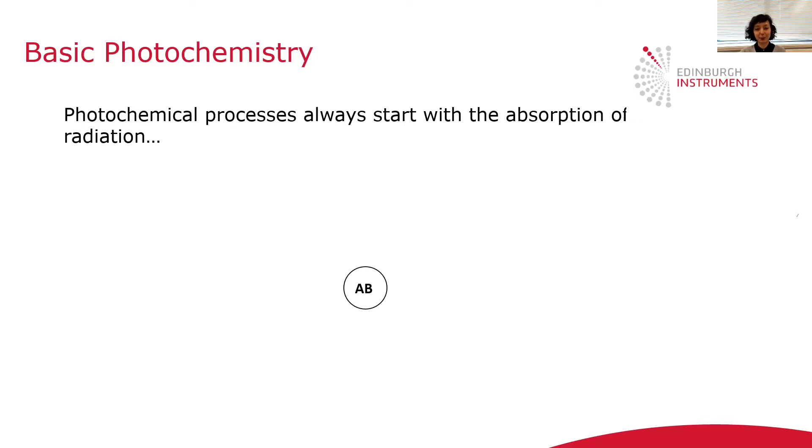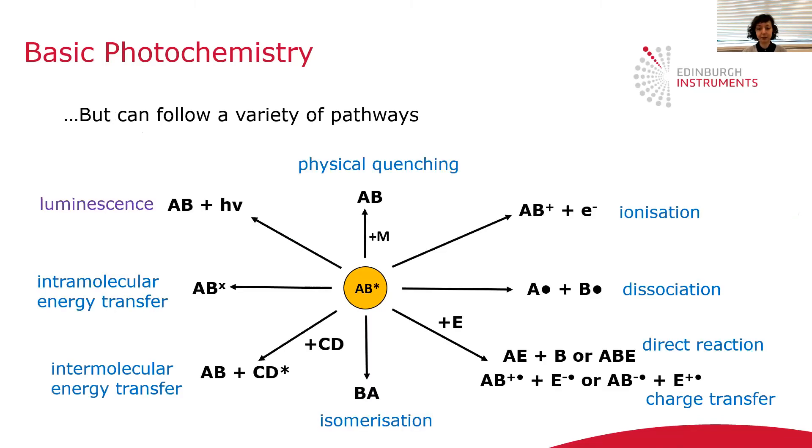Let's see what happens in a typical photochemistry experiment. Let's imagine that we have a molecule AB and we irradiate it. A photochemical process will always start with the absorption of radiation and the excitation of our material of interest.